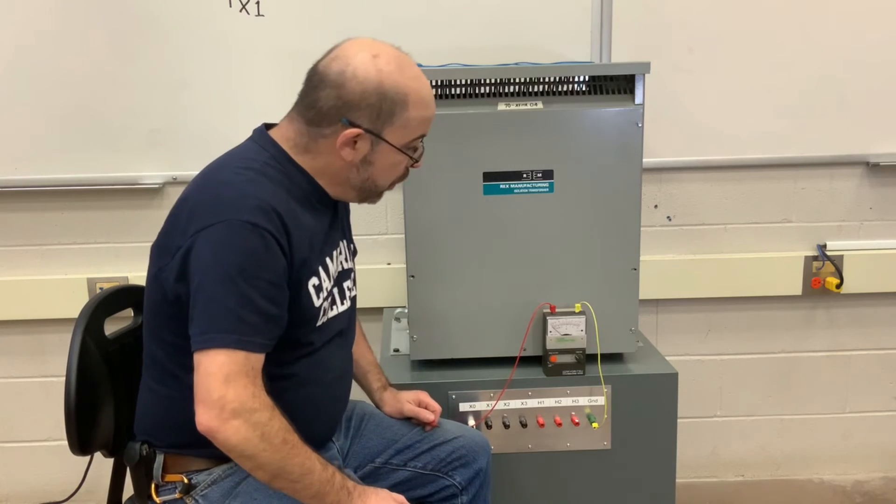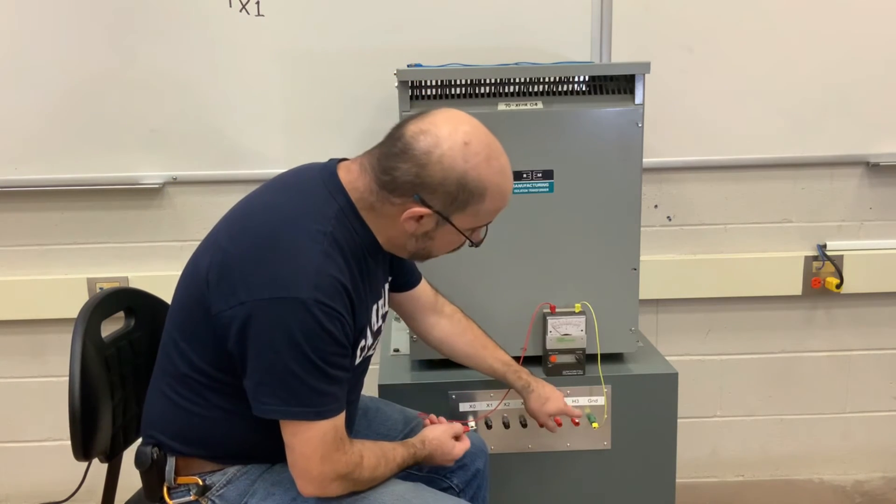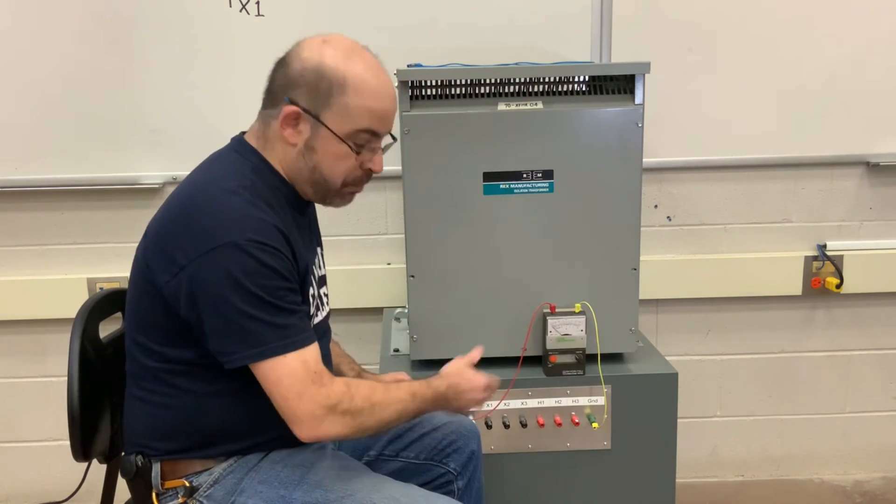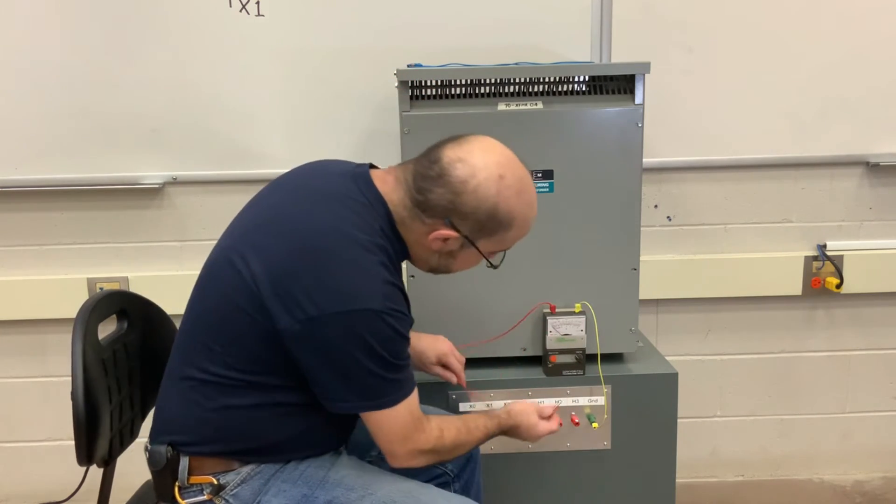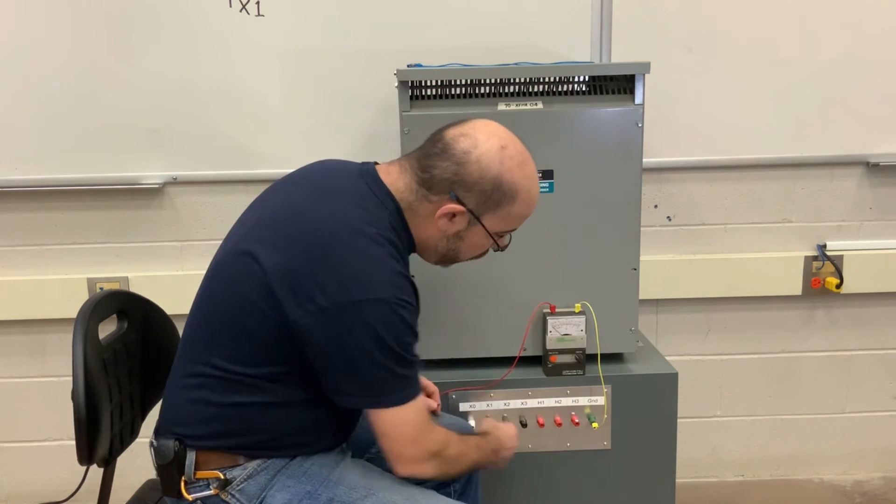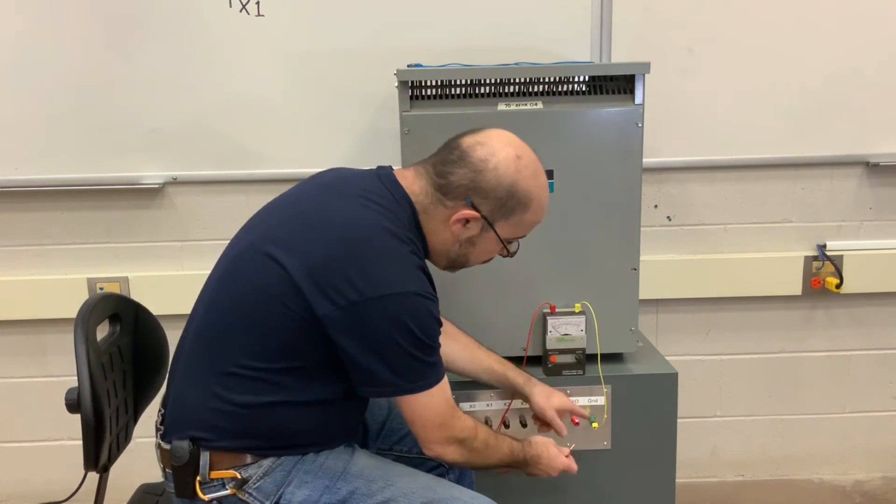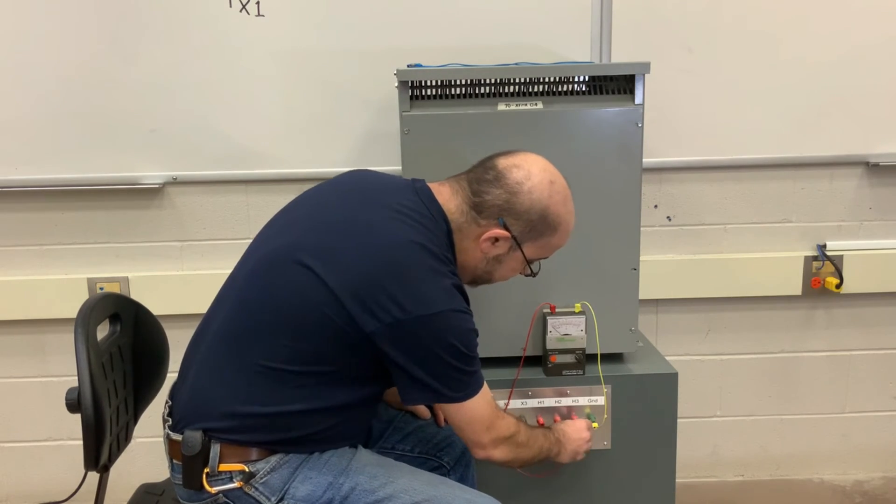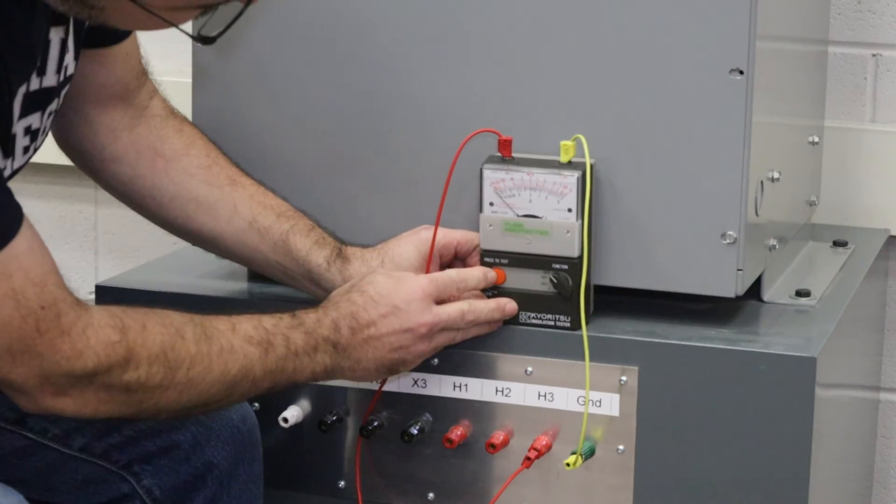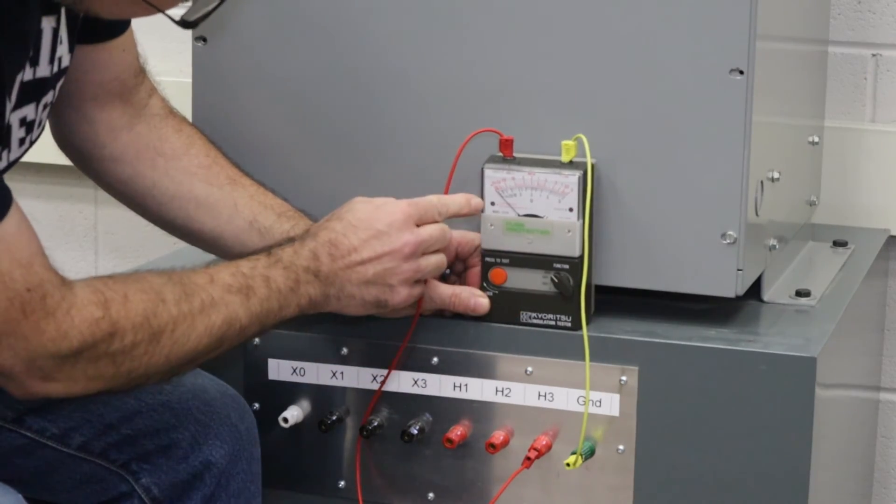So now we're on step three where we're going to check each of the windings to ground. Now I've changed the leads just for the sake of clarity. And what we're going to do is we're going to start off with the primary. And I'm going to work from right to left. So we're going to start off with ground to H3. Now here we don't want to see continuity. So let's have a look here. And we can see nothing.